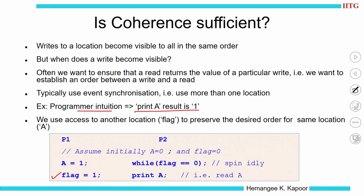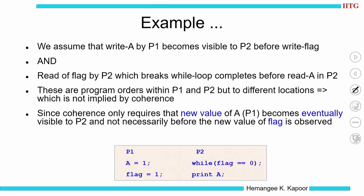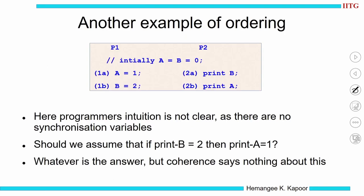This is how we can establish event synchronization if I want a particular value returned. From the programmer's intuition, print a results in 1, and we accomplished that using a flag as a synchronization variable. Coherence alone was not sufficient — we had to do something more. One more example: process P1 does two writes, a equal to 1 and b equal to 2, while P2 does two reads — print a and print b. When I say print, that is read the value and print it to the output screen.